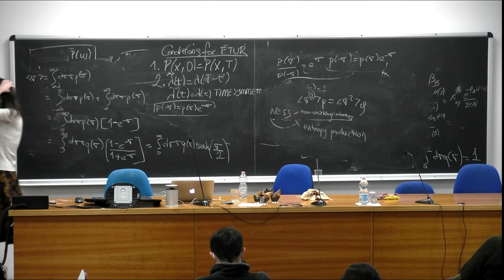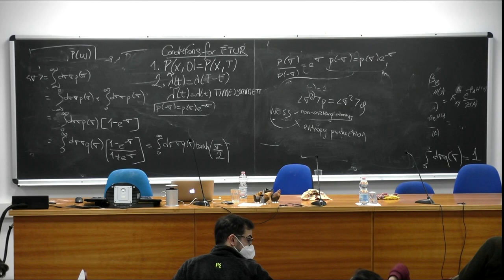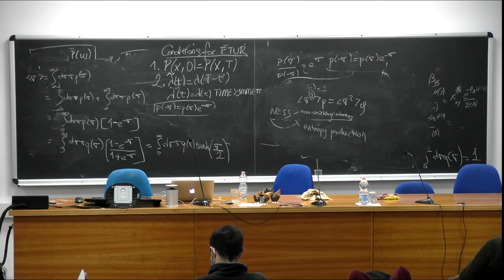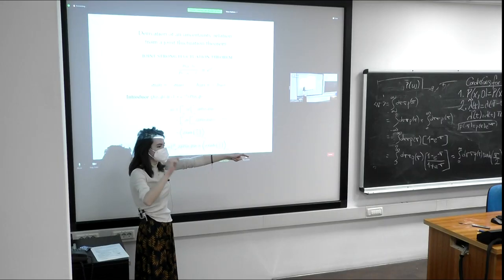Believe me when I tell you that these joint random variables — the joint strong fluctuation theorem — work perfectly. If you have this, what you're doing is running the movie forward while keeping track of not only the entropy production, but the currents associated with this entropy production.